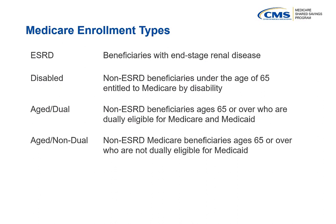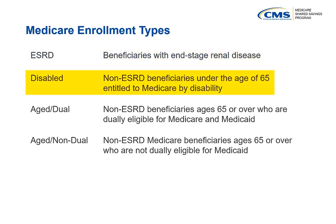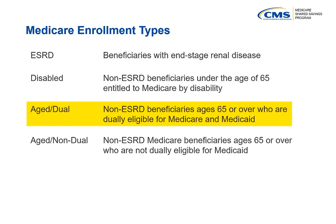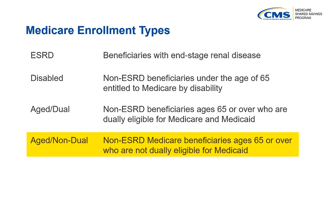Note that the calculations are performed separately for the four Medicare enrollment types: Beneficiaries with End-Stage Renal Disease, or ESRD; Disabled Beneficiaries, which are non-ESRD beneficiaries under age 65 entitled to Medicare by disability; Aged Dual Beneficiaries, which are non-ESRD beneficiaries ages 65 or over who are dually eligible for Medicare and Medicaid; and Aged Non-Dual Beneficiaries, which are non-ESRD Medicare beneficiaries ages 65 or over who are not dually eligible for Medicaid.